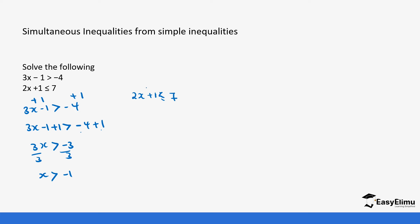We solve the second equation: 2x plus 1 is less than or equal to 7. We subtract 1 from both sides: 2x plus 1 minus 1 is less than or equal to 7 minus 1, giving 2x less than or equal to 6. We divide both sides by 2 — no sign change needed — so x is less than or equal to 3.